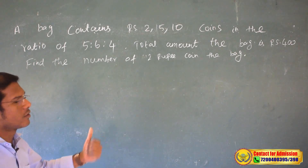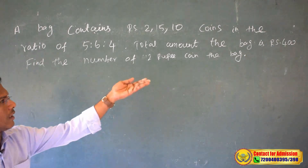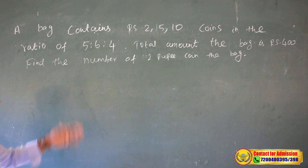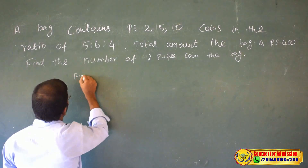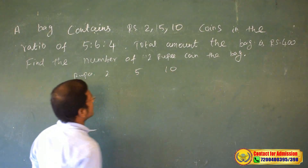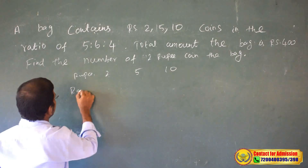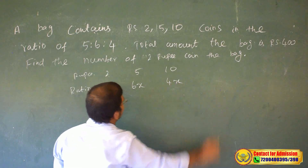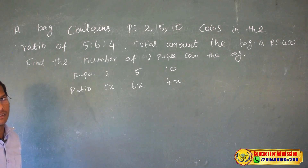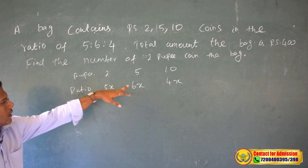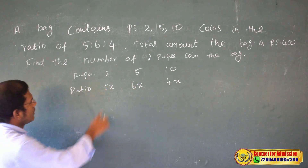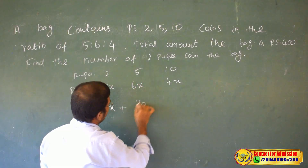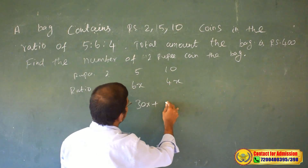Now, the denominations are rupees 2, 5, and 10. Let the number of 2-rupee coins be 5x, the number of 5-rupee coins be 6x, and the number of 10-rupee coins be 4x. So the value contributions are 2 times 5x = 10x, 5 times 6x = 30x, and 10 times 4x = 40x.